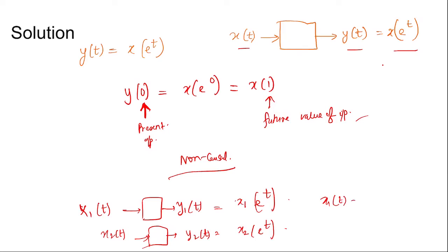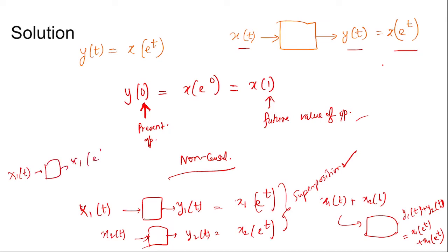Then x1(t) + x2(t) gives output x1(e^t) + x2(e^t), so superposition is satisfied. Now if we want to analyze homogeneity, then for x1(t) input we get x1(e^t) output. If we give a·x1(t) as input, we find a·x1(e^t) as the output.